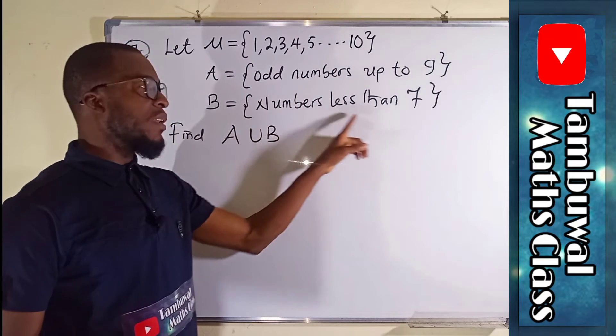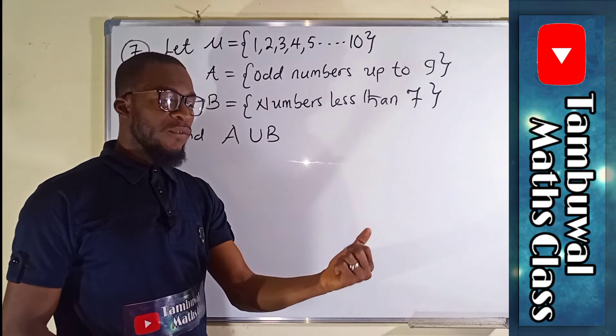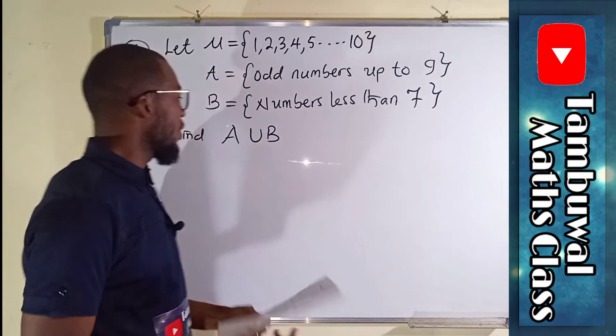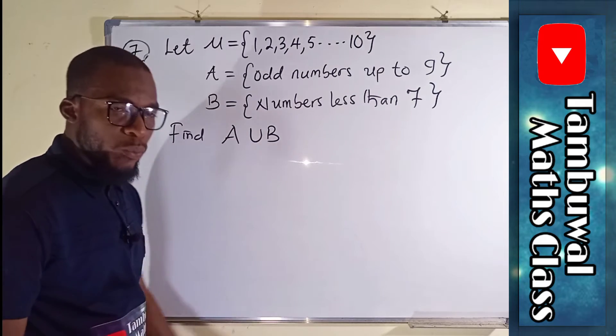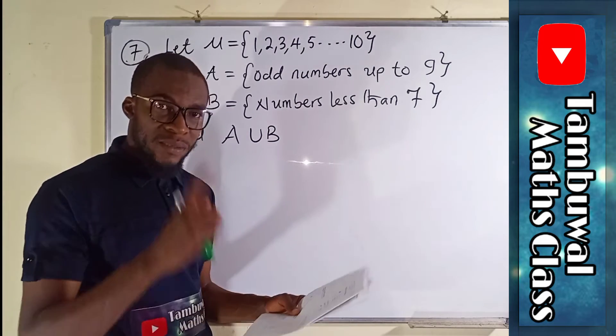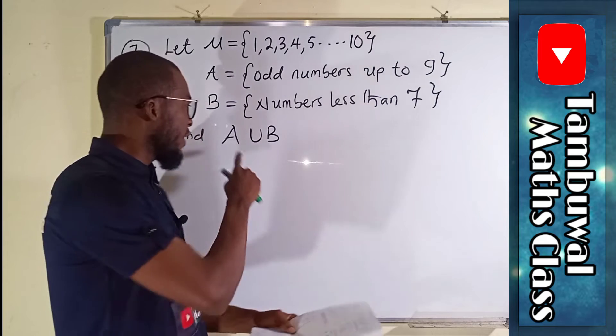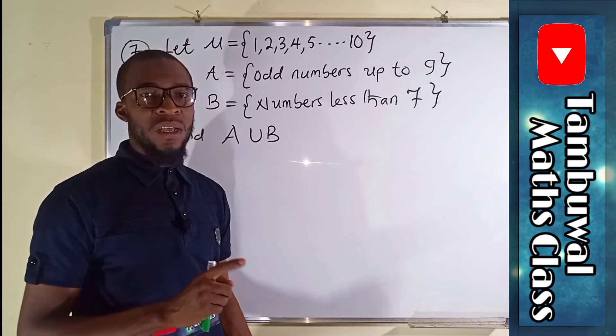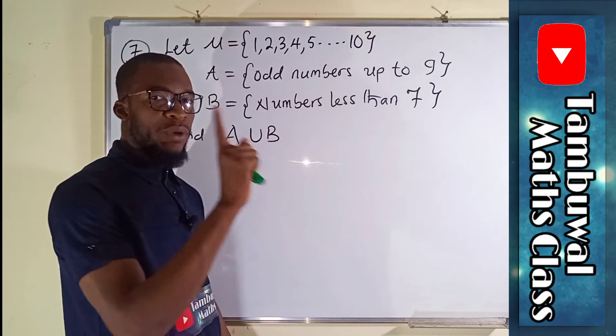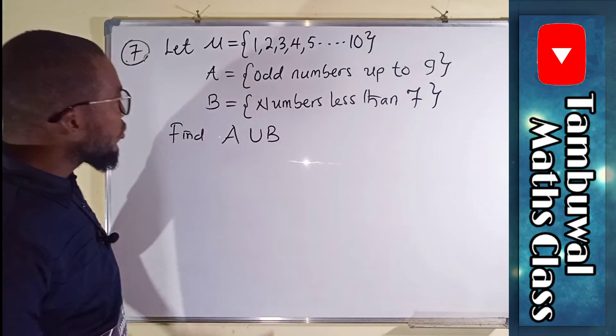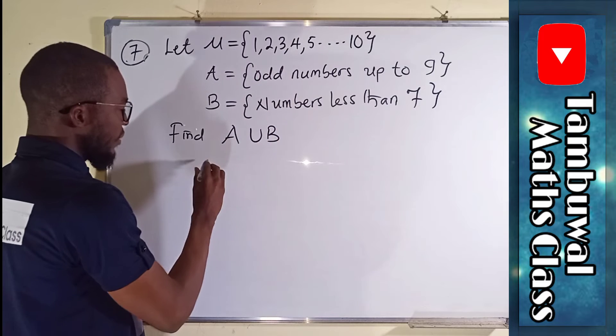B is a set of numbers less than seven, so you count one, two, three, four, five, six, you stop. We are asked to find the union of A and B, meaning we should form another set, a single set that comprises all the elements in A and B without a repetition. So if there is an element here that corresponds to an element here, you write it once.